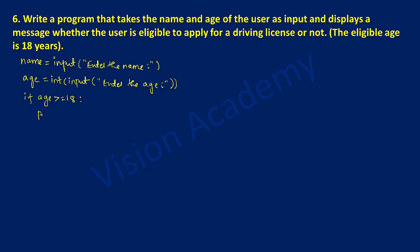Here I'm going to write a print statement. In double quotation marks I want to print 'hello', then a comma, then the name variable, then a comma, then in double quotation marks one space and exclamation mark, and I'll type 'you are eligible', then close the bracket.